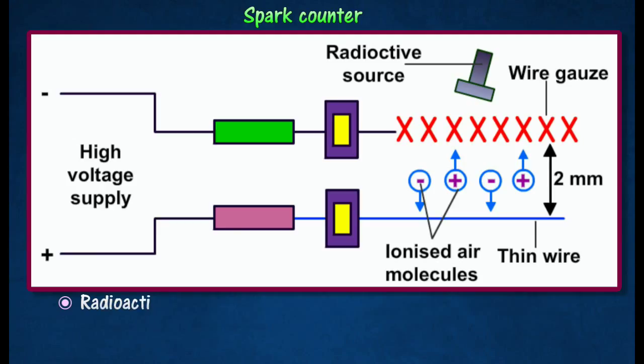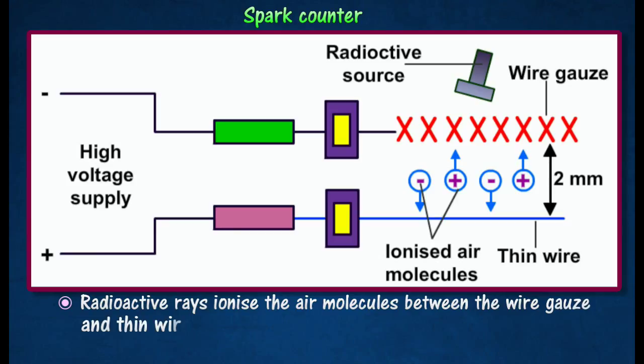When a radioactive source is held one or two centimeters above the gauze, sparks are seen and heard at irregular intervals. This is due to the radiation ionizing the air between the gauze and the wire.